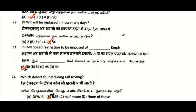DFWR will be replaced in how many days? The maximum time given for replacement of DFWR is three months, that is 90 days. IMR speed restriction to be imposed: 30 kmph or stricter.